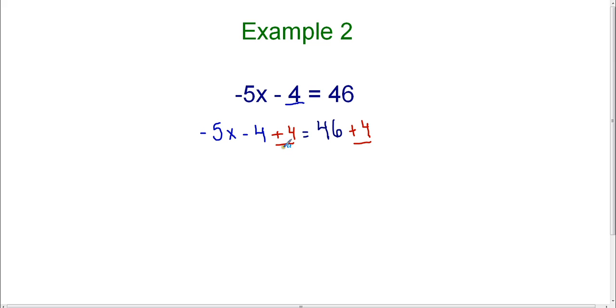Now the reason that I did this is because think of this now as a negative 4. Negative 4 plus 4. That's 0. That's how I've gotten rid of it on the left-hand side. So now I'm going to bring down what's left. On the left-hand side, I still have negative 5x. And on the right-hand side, I now have 46 plus 4. And 46 plus 4 is 50. So my new equation now is negative 5x equals 50.